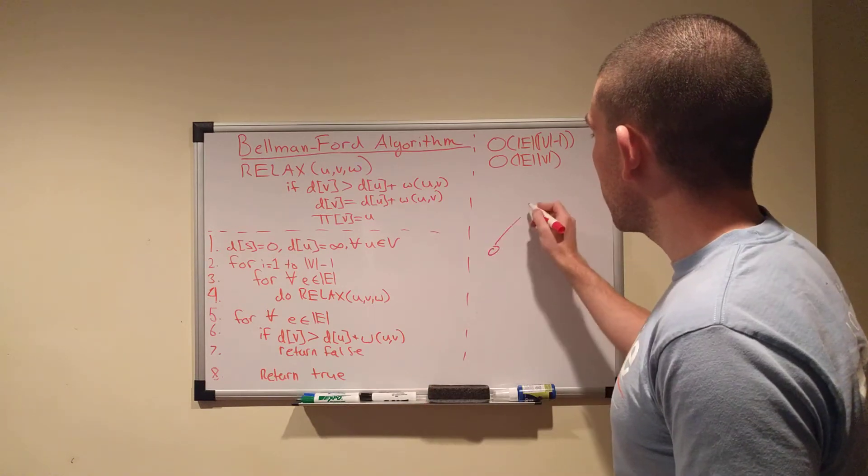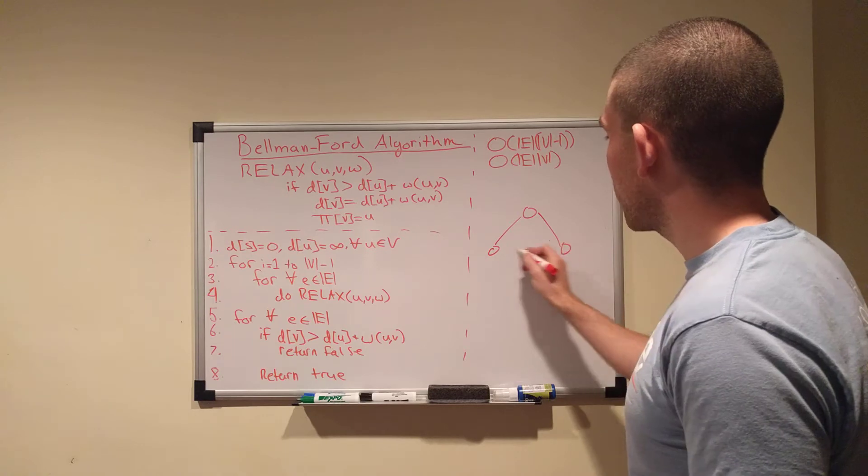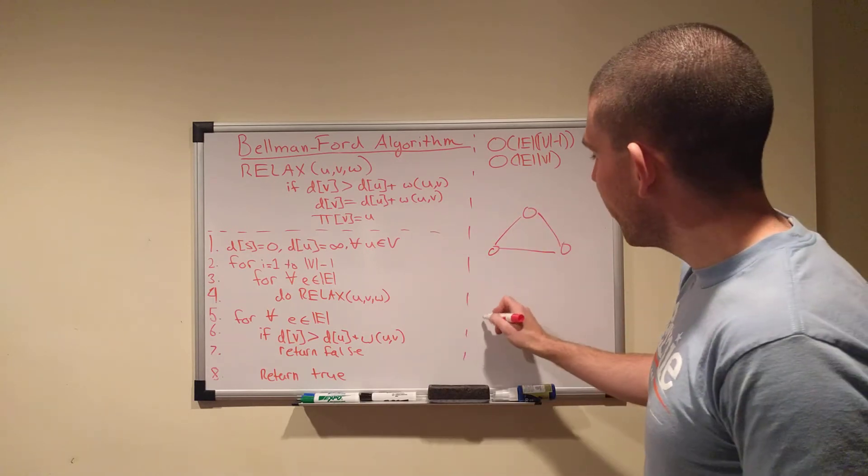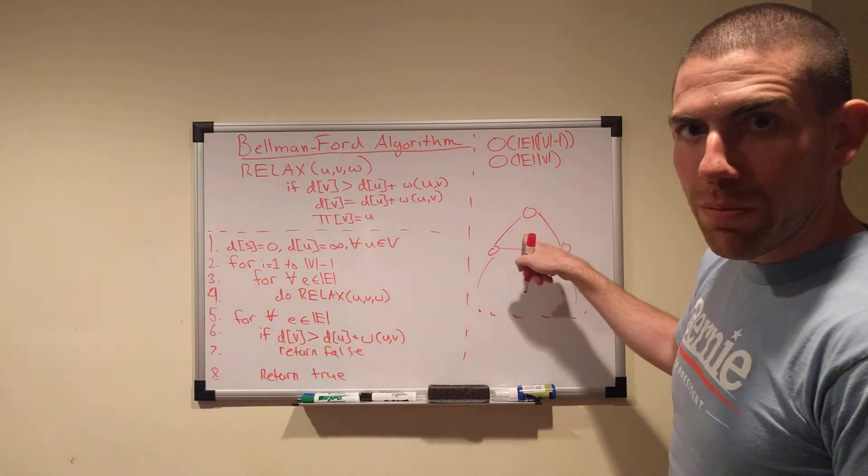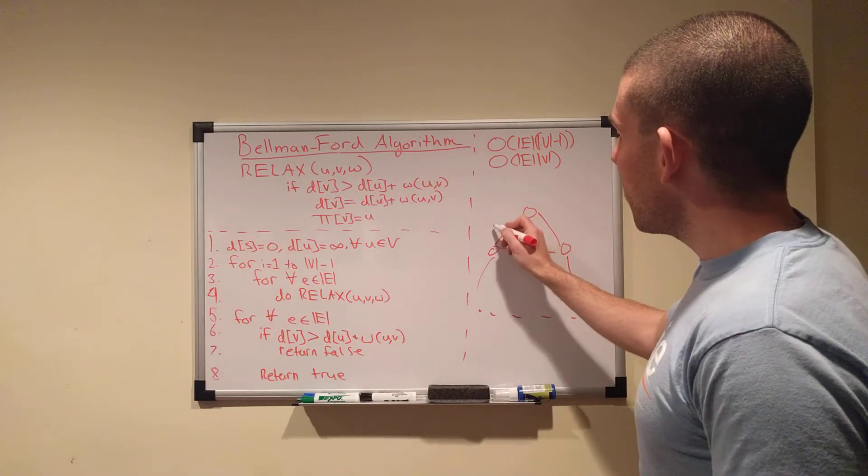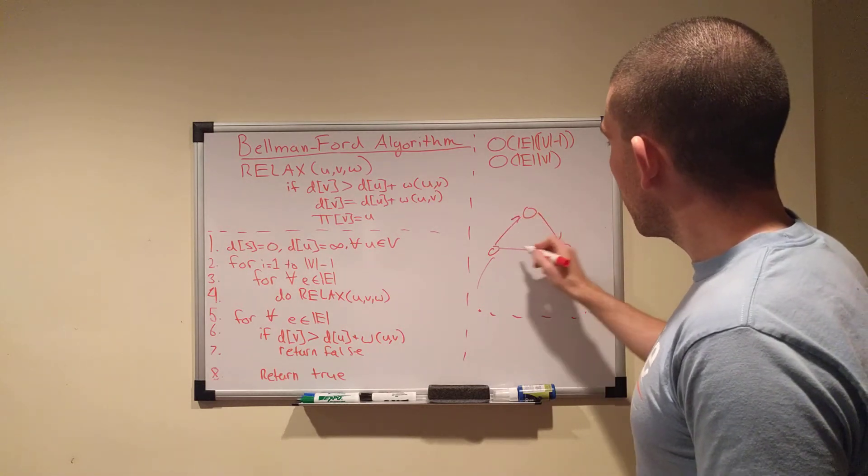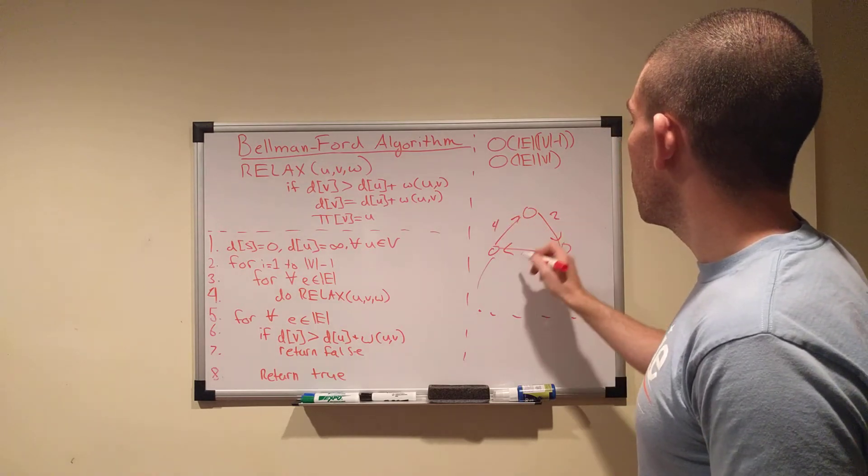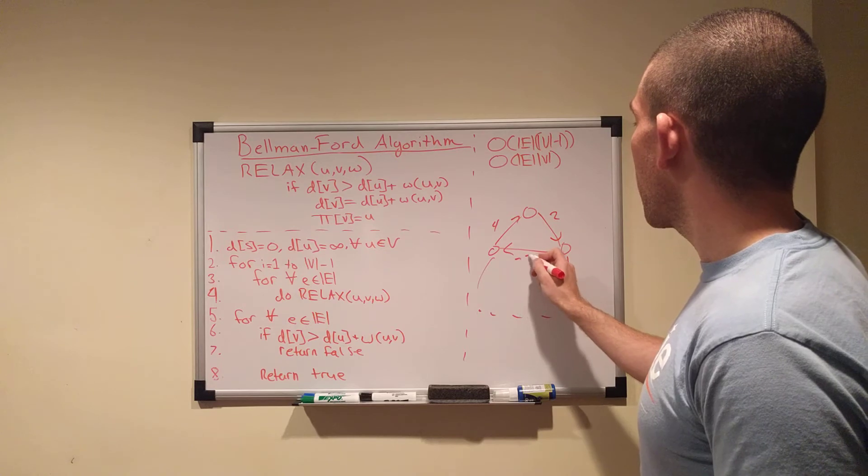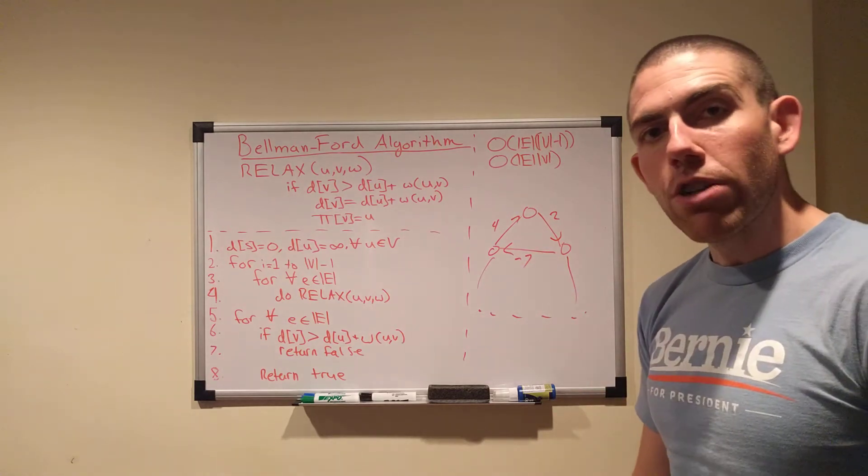If you have a negative weight cycle, it's going to look something like this. Say your graph has something like this going on in it, and, you know, you can... Maybe there's more to the graph down here. But the point is that this is here. And you've got, maybe this is 4, 2, and negative 7 for edge weights.